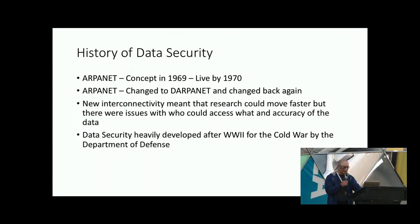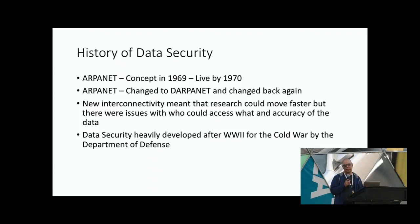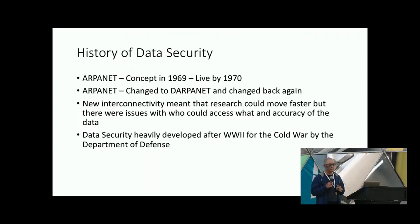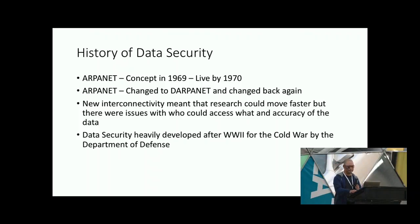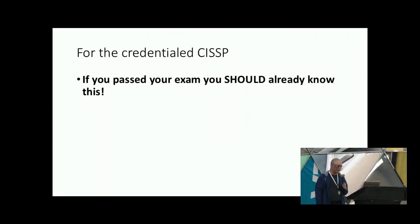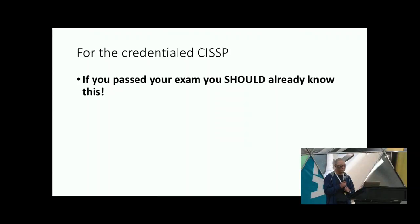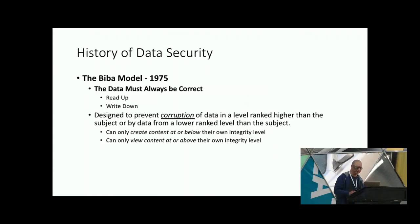When we ended World War II, we actually had a cold war, which was a lot of research and development. Since we could transfer data back and forth, we needed to figure out how to prevent the leakage of secrets — our missiles, our space program, and everything else. If you are a CISSP and you passed the exam, you should know what I'm going to show. If you got it and you still don't get it, I feel sorry because then it really is a mill.